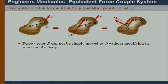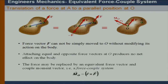So in other words, all of these systems are actually equivalent in nature because they must produce the same push or pull or same turning action about the point O. We can calculate what that moment vector M_O is through simply r cross F.